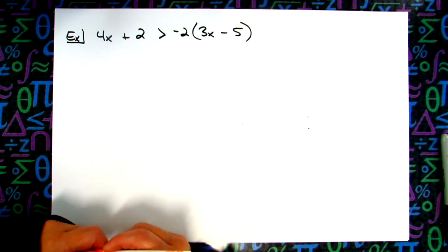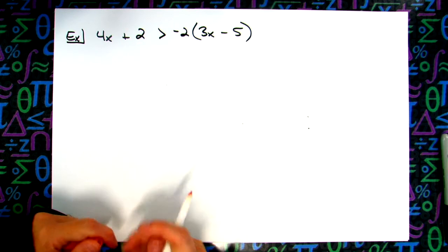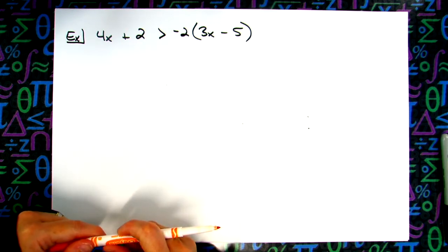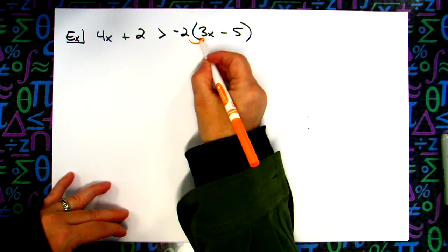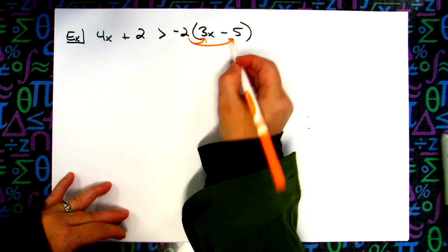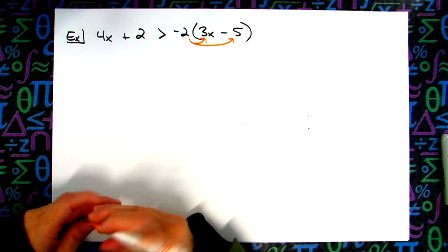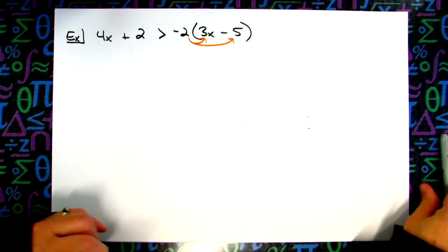Tell us what's the first thing we got to do? We got to solve these parentheses here, so we've got to distribute that negative 2. All right, we got to do some distributive property first.